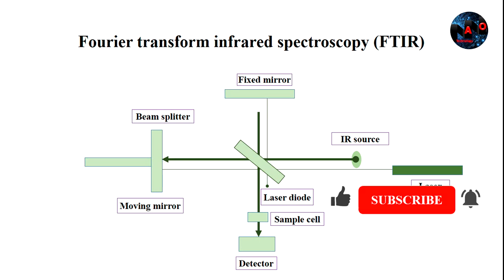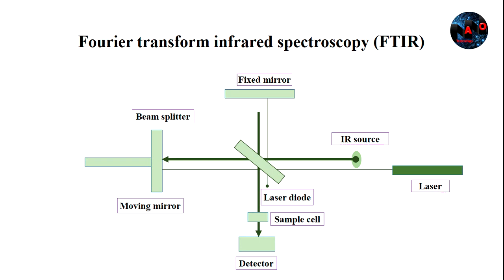A schematic diagram of a FDIR spectrometer is depicted in this figure. A typical FDIR spectrometer includes a source, sample cell, detector, amplifier, analog to digital converter, and a computer.